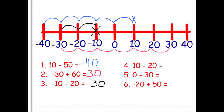Number four: we're on ten and we're subtracting twenty — subtract ten, subtract twenty — so we finish on minus ten, or negative ten. Number five: we're on zero and we're taking away thirty — ten, twenty, thirty — so we finish on negative thirty, or minus thirty. Number six: we're starting on negative twenty and we're adding fifty — ten, twenty, thirty, forty, fifty — so we finish on thirty.